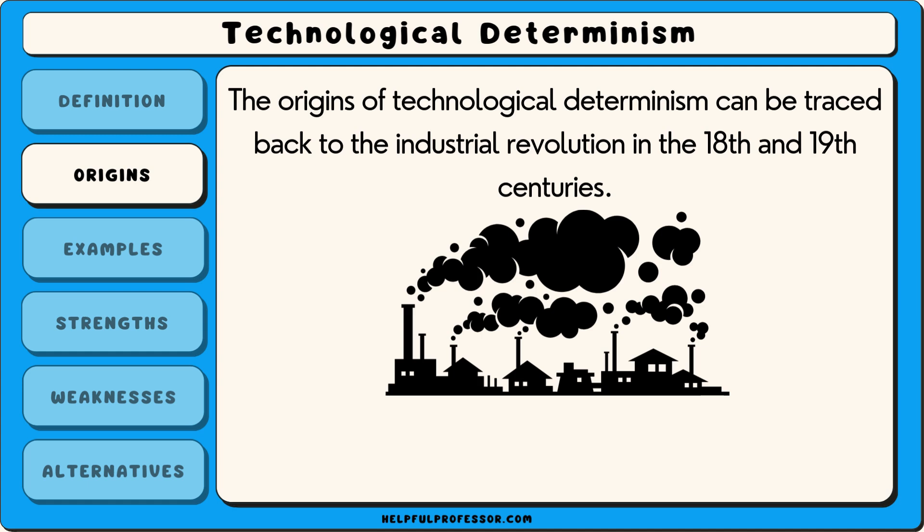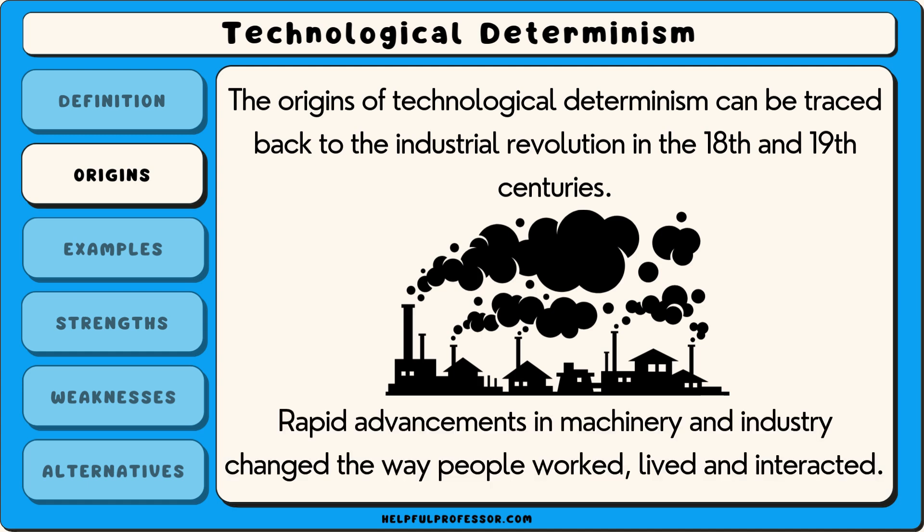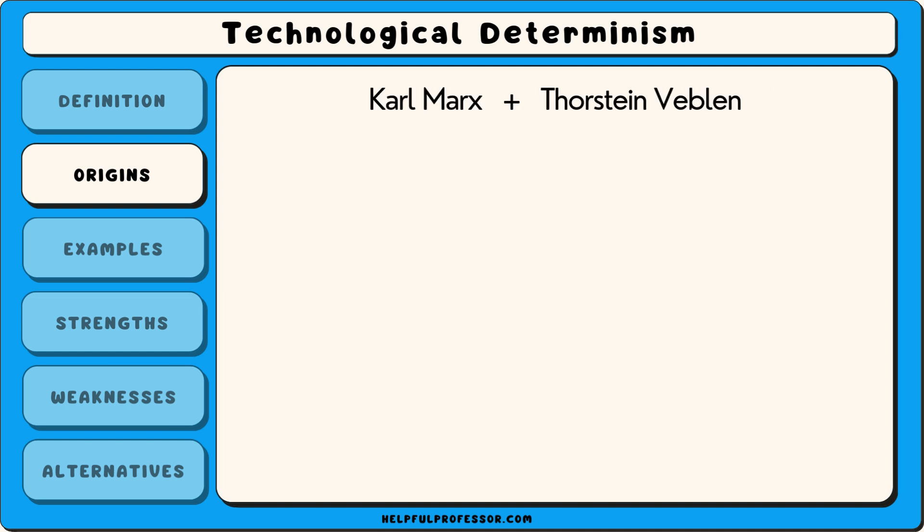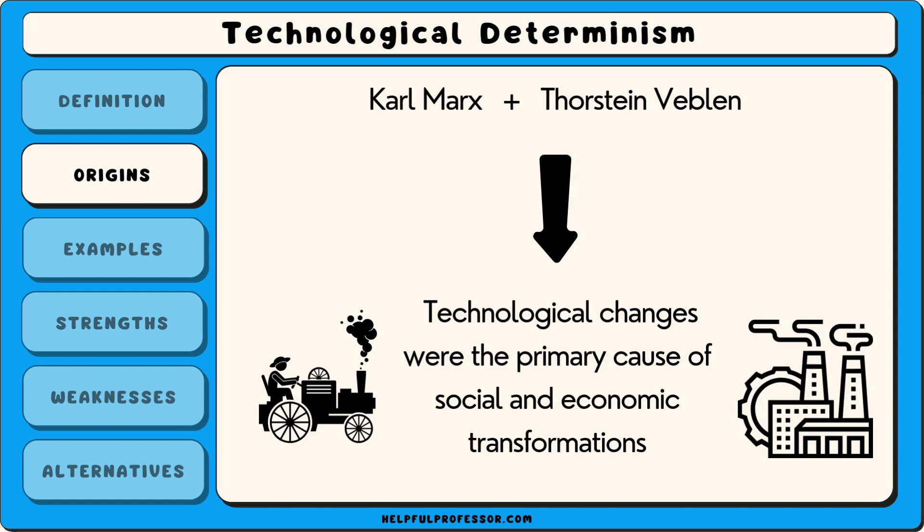The origins of technological determinism can be traced back to the Industrial Revolution in the 18th and 19th centuries. During this time, rapid advancements in machinery and industry dramatically changed the way people worked, lived and interacted. Early thinkers like Karl Marx and Thorstein Veblen suggested that these technological changes were the primary cause of social and economic transformations.